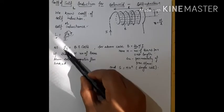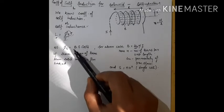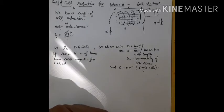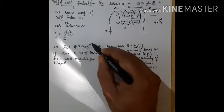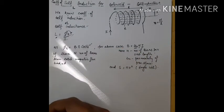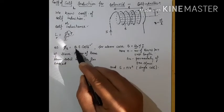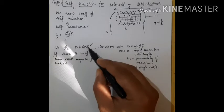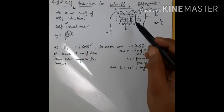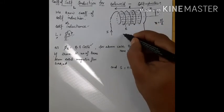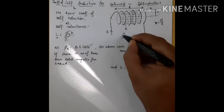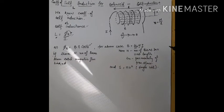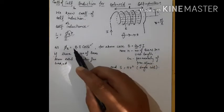We know that the magnetic flux is equal to B·S·cos(θ), and that is for a single coil. If we have capital N number of coils, we multiply by N. The angle θ is the angle between the magnetic field and the surface area. From the diagram, the surface area of a loop is along the same direction as the magnetic field, so cos(0°) equals 1, and our magnetic flux becomes B·S only.